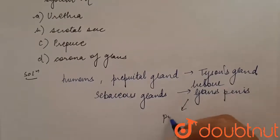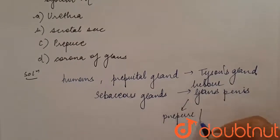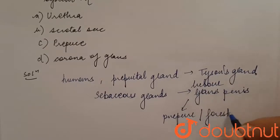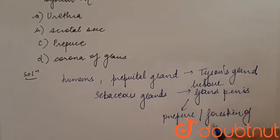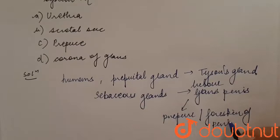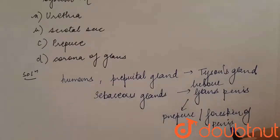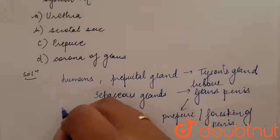The prepuce or the foreskin of the penis. They were named after Edward Tyson, who was the first to note this gland.